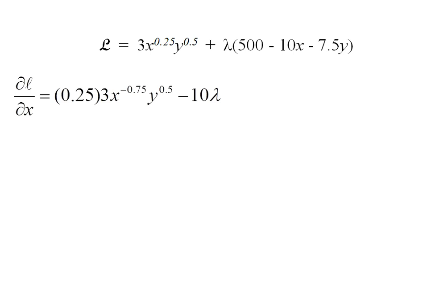The first step is to take the partial derivative of the Lagrangian with respect to x. The x has an exponent of 0.25, so that's going to get multiplied down in front on the coefficient of 3. I'm going to reduce the exponent on x by 1, leaving negative 0.75. I recopy the y as is with its exponent of 0.5.